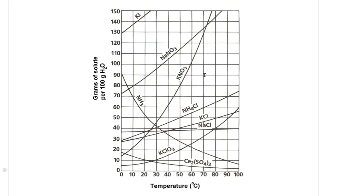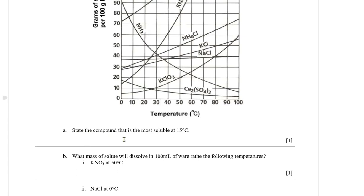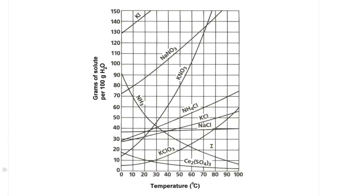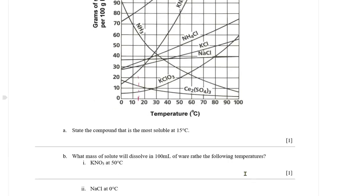We have a solubility graph — it looks complicated but you just draw out the information you don't need. The question asks which compound is most soluble at 15°C. At 15°C the highest solubility belongs to potassium iodide.